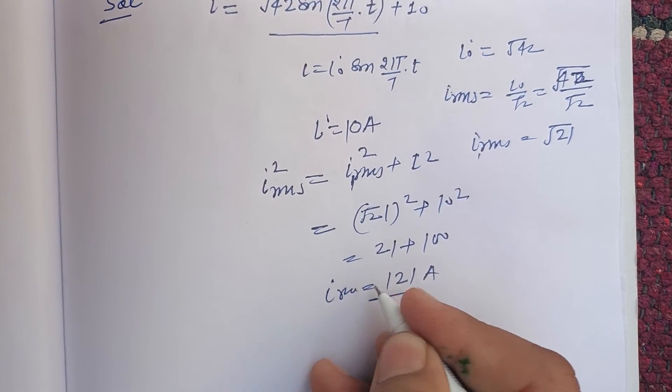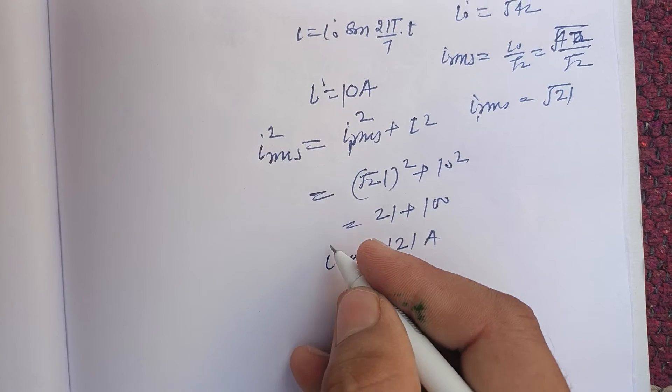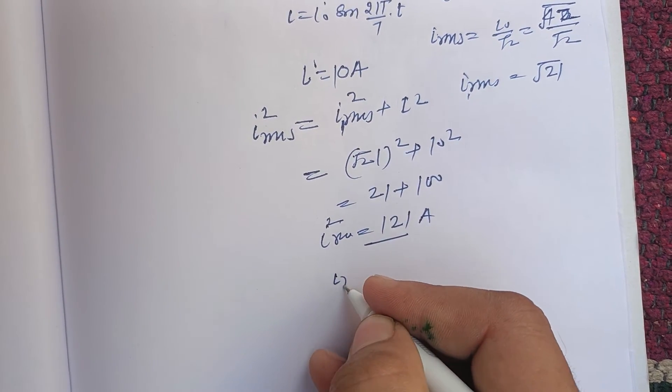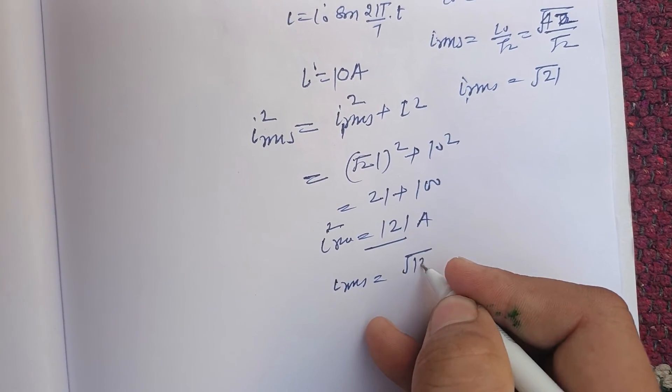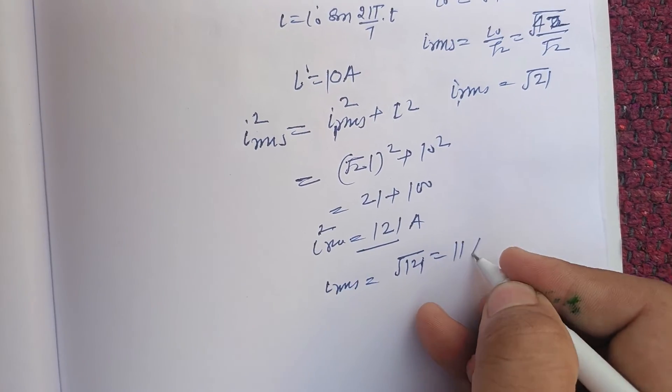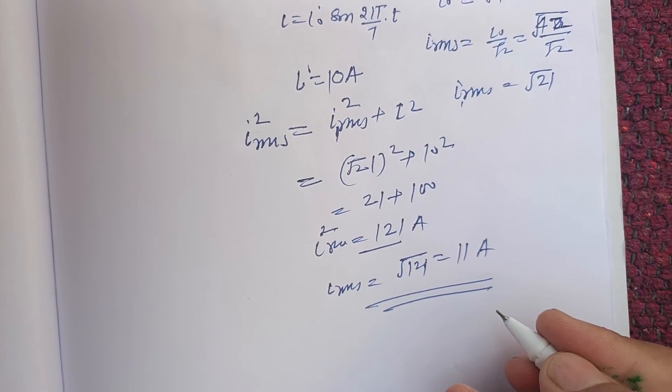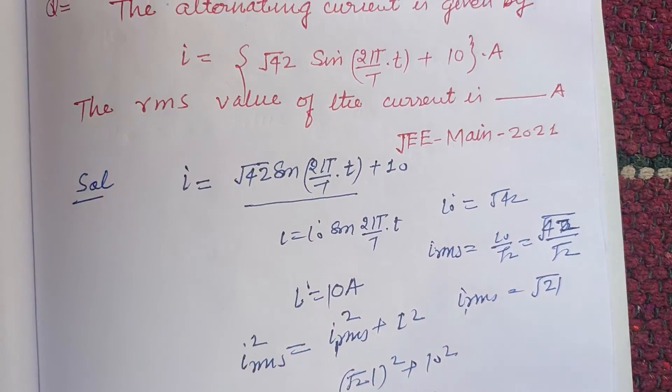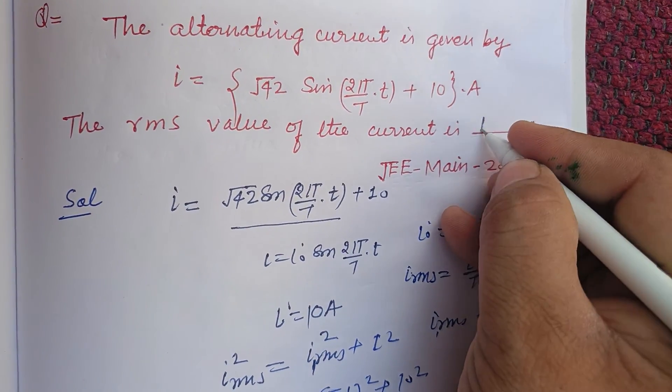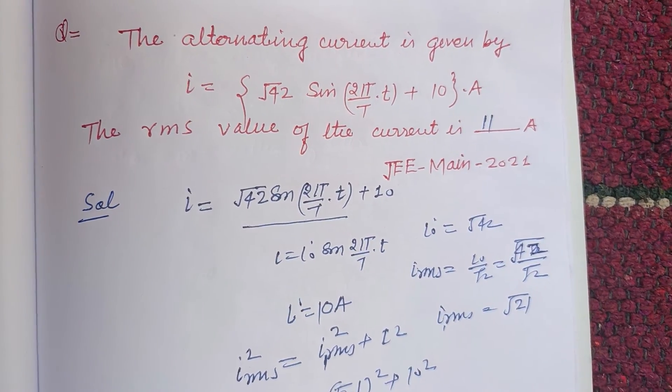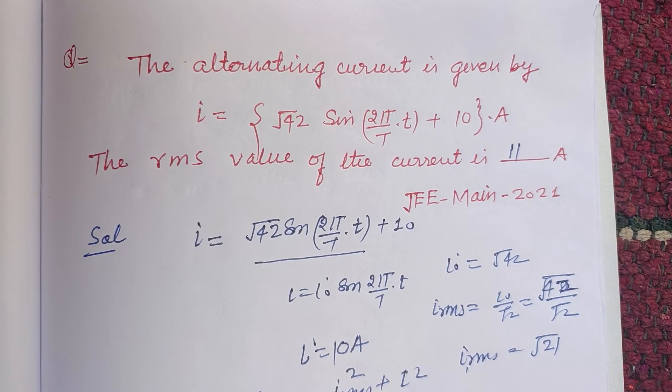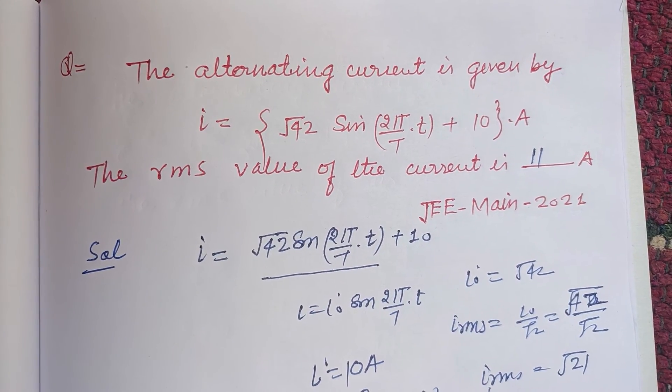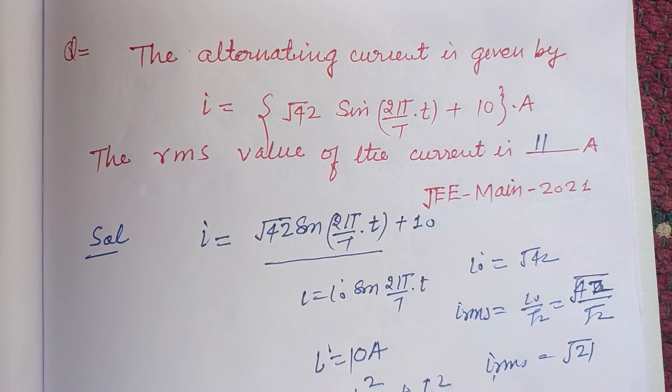i_rms squared. So taking its root, i_rms = √121, that is 11 ampere. So 11 ampere is the correct answer to this question. I hope you got it. Please like the video, subscribe the channel, thanks for watching.